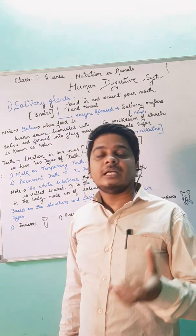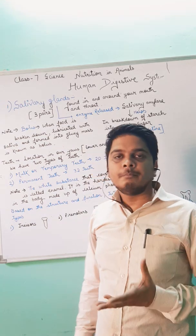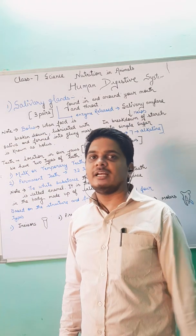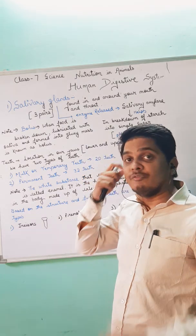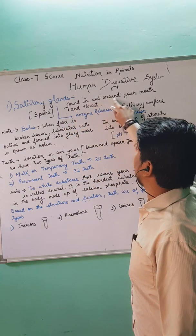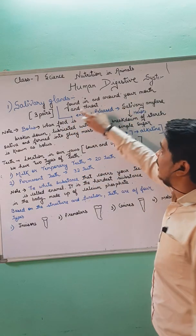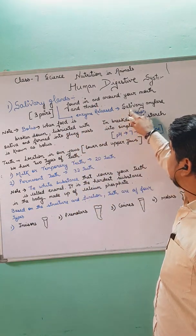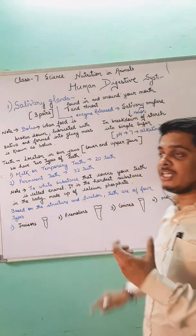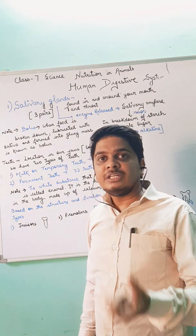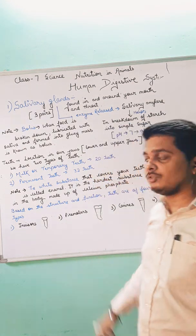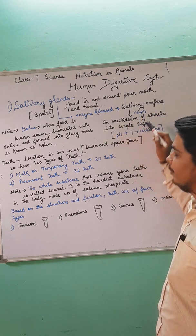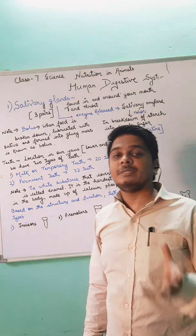The salivary gland helps in chemical digestion in the mouth. Three pairs of salivary glands are present inside our mouth. They are found in and around your mouth and throat. The salivary gland releases an enzyme known as salivary amylase.